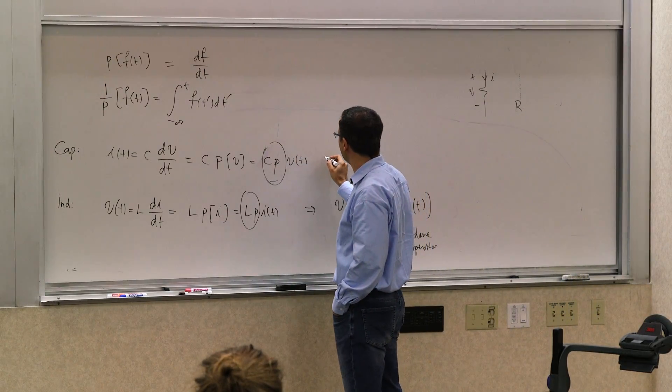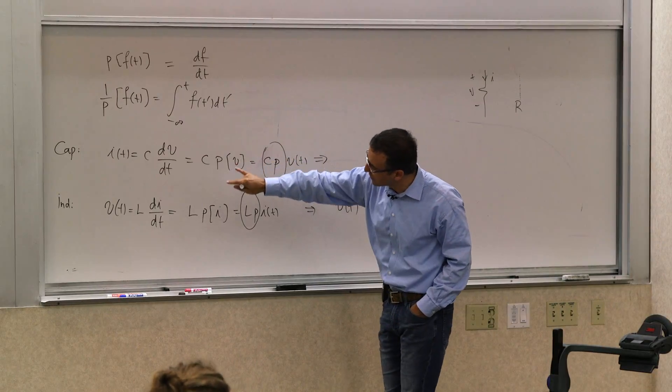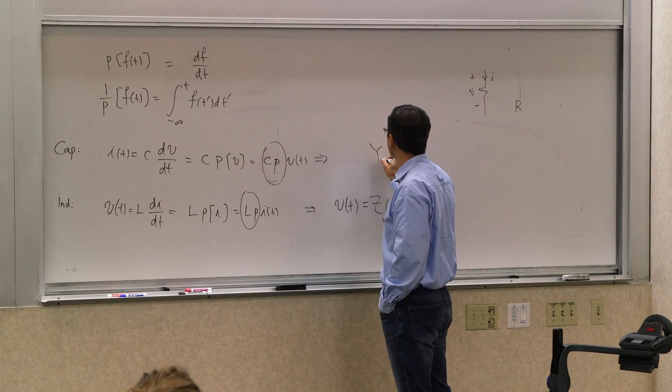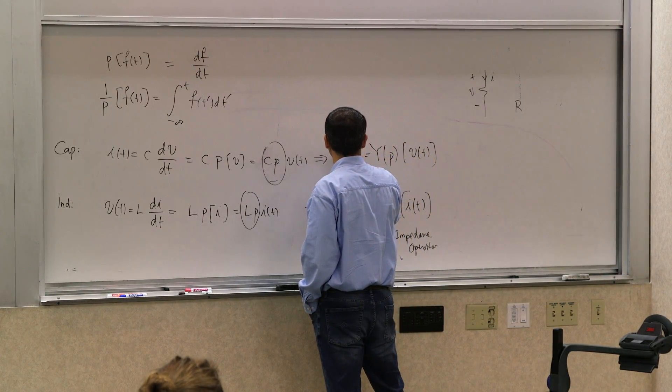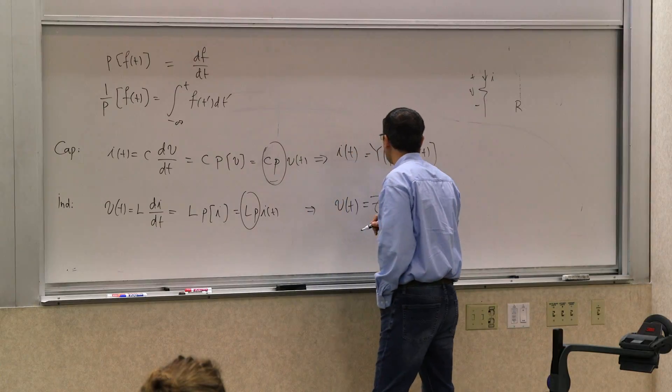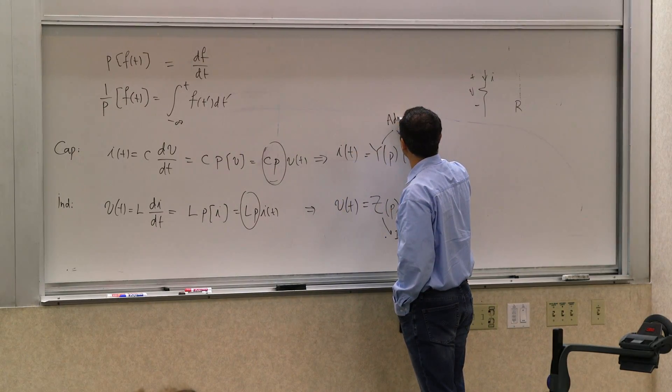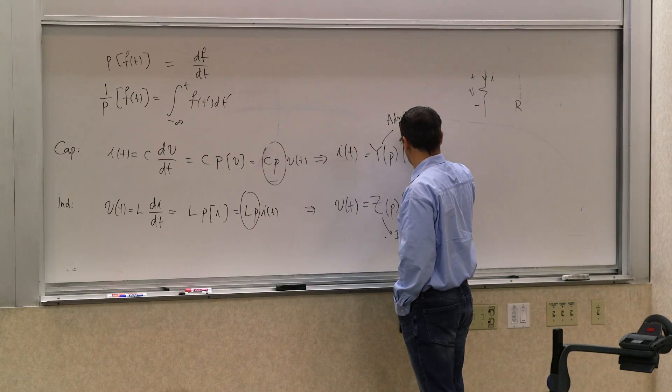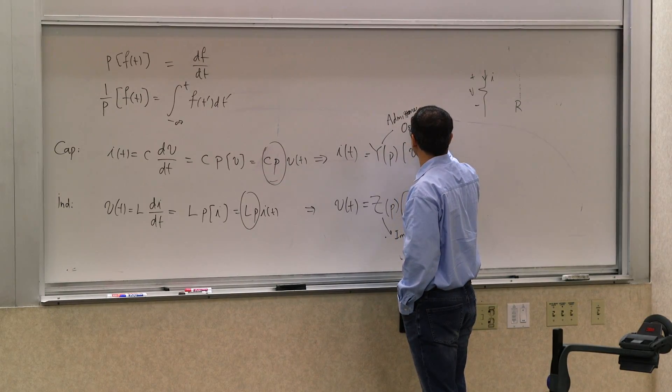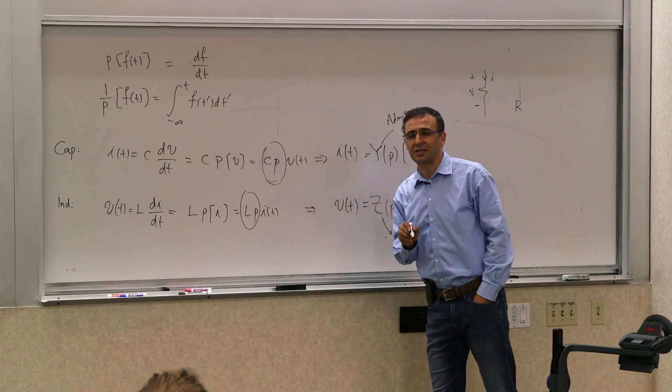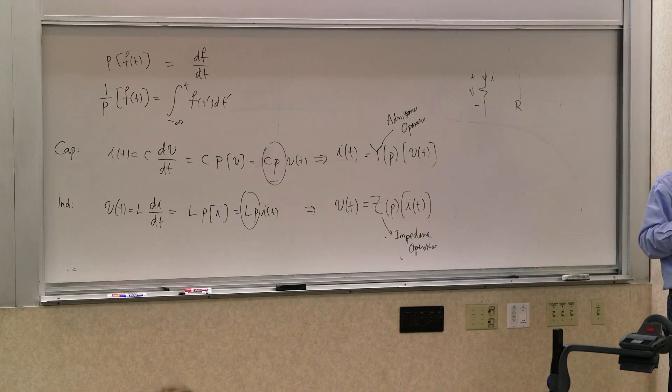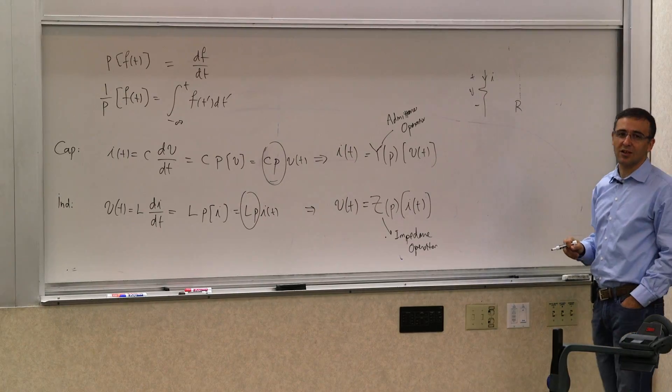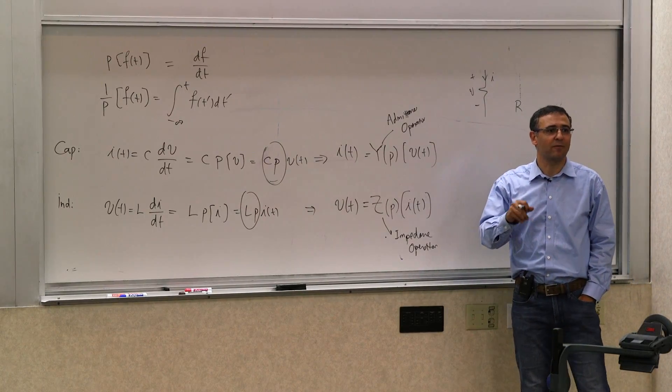And similarly, you can define an admittance operator, which relates a voltage to a current. So we show those with y(p) that operate on a voltage and produce a current. And these are called admittance operators. And hence the name y matrix. You remember we had y matrix which had conductances before.